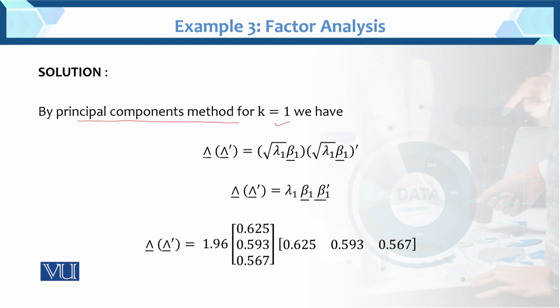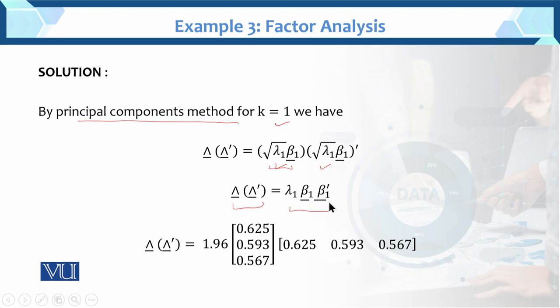Now here we have Lambda and Lambda prime. We use the pair of eigenvalues and eigenvectors. Lambda prime equals beta 1 times square root of lambda 1 times beta 1 transpose. In general, Lambda prime equals square root of lambda 1 times square root of lambda 1 times beta 1 times beta 1 transpose. When multiplied, the square roots cancel, giving Lambda prime equals lambda 1 times beta 1 times beta 1 prime.